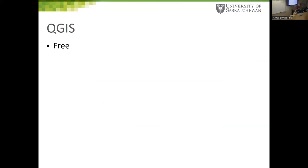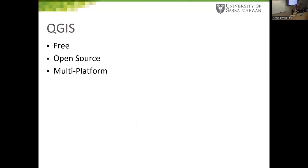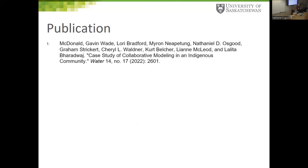I used QGIS — which I'll plug briefly: it's free, open source, multi-platform, and Python-scriptable. If you need GIS software and can't afford ArcGIS or other major commercial packages, it's worth considering. We have a paper published in the journal Water.